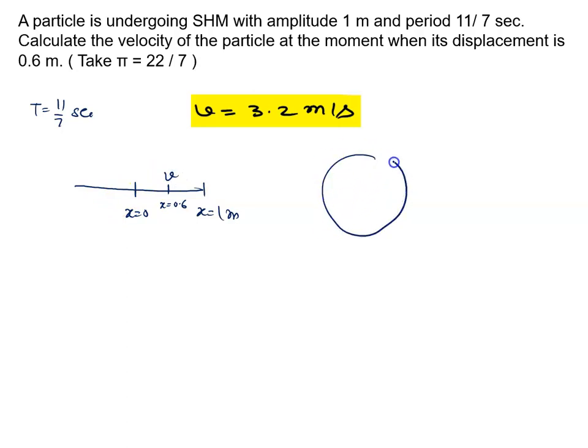Main phasor circle bana raha hoon. This is the phasor circle. X equal to 0 and x equal to 0.6. This angle is theta. This is 0.6. A, b and you draw the perpendicular c.